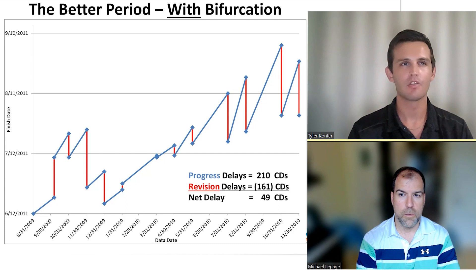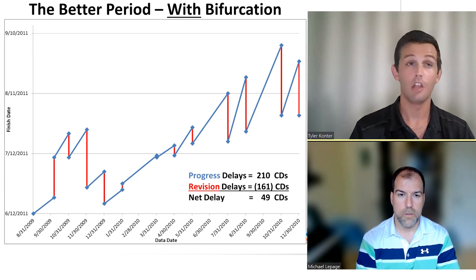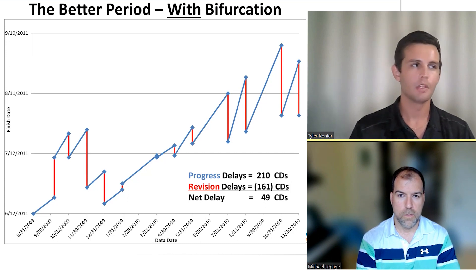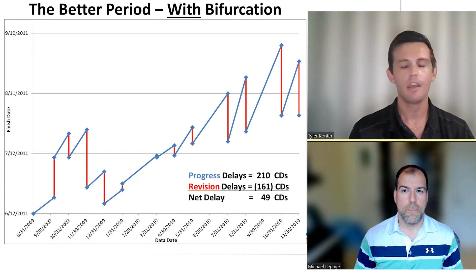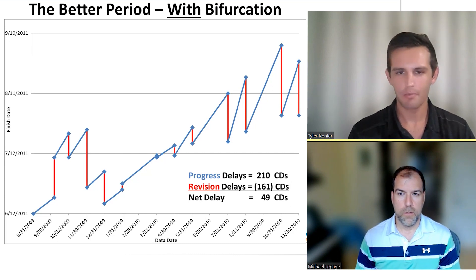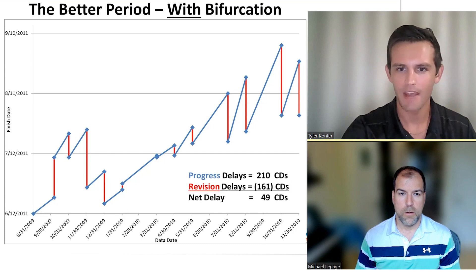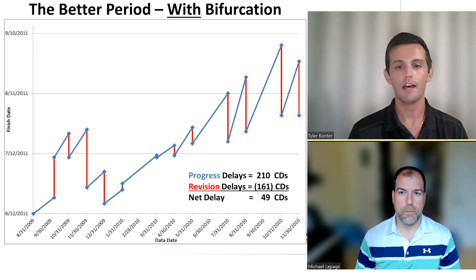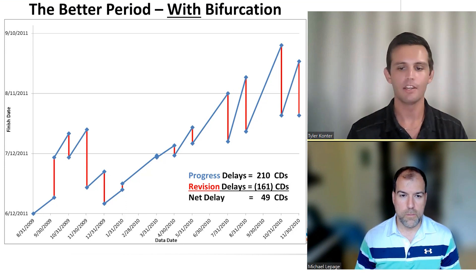Those revisions involve taking activities and shortening their durations in the future, looking at our logic — perhaps changes in logic — taking activities that were formerly sequential and making them concurrent, reducing lags, and adjusting forecasted activities along our critical path. Ultimately, we went through that same process. Those red lines are now bringing back our progress delays. We forecasted that we were going to mitigate 161 calendar days of our 210 calendar days of progress delay, and that's how we ended up with our net delay of 49 calendar days.